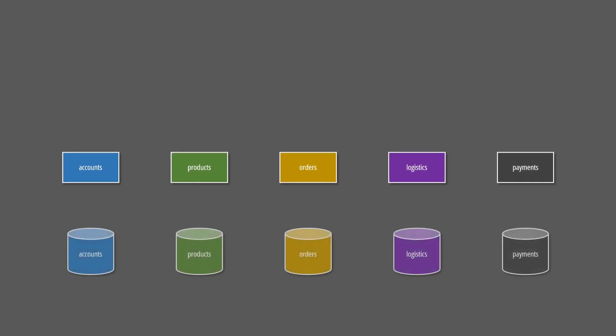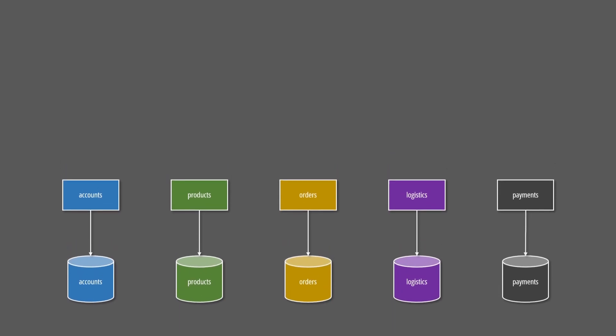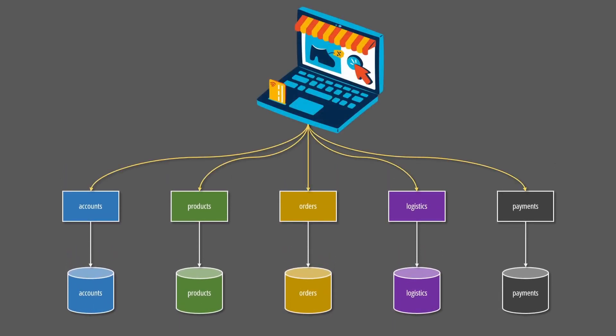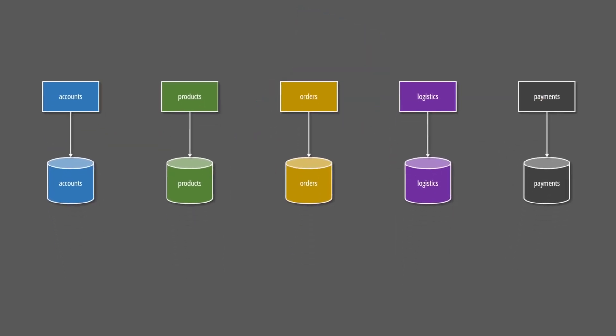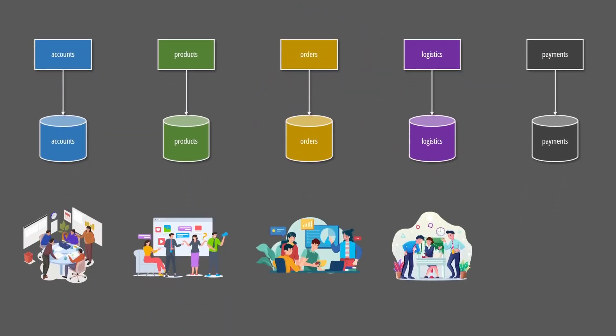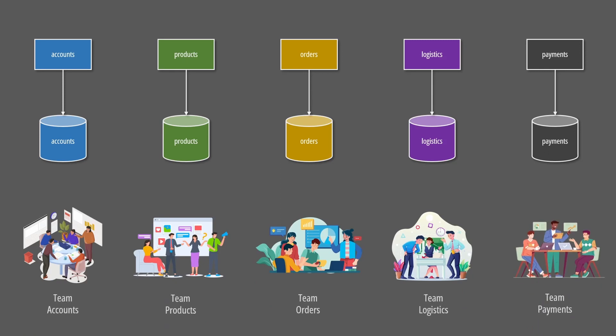In a microservices architecture, each service manages its own subdomain in the context of a larger system. The data is stored in independent databases and can be accessed only through APIs or events exposed by those services. This approach allows us to parallelize the implementation of each service and also to operate services independently.